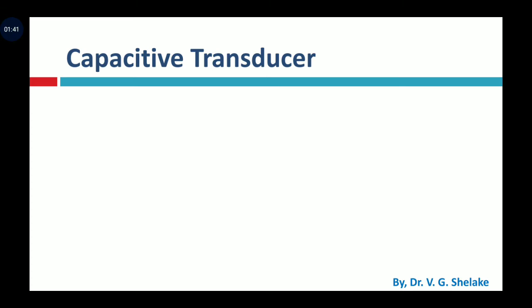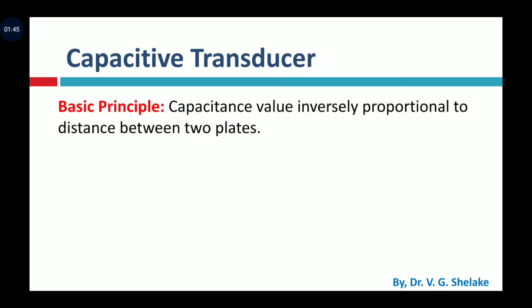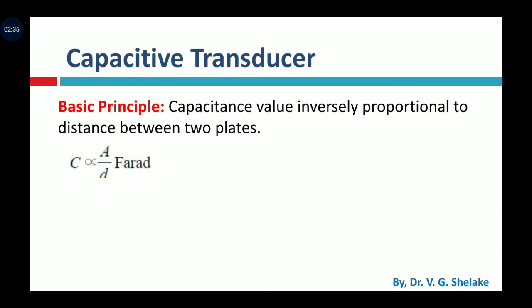The capacitance value C depends on various factors: the area of the plate, the distance between the two plates, and the medium used between the plates — the dielectric medium. Once the capacitor is formed, we cannot change the area of the plates or the dielectric medium. But if we want to change the capacitance value, we can change the distance between the two plates, and using this principle we construct the capacitive transducer. Capacitance is inversely proportional to the distance between the two plates.